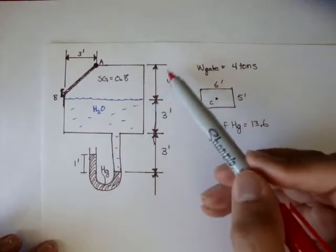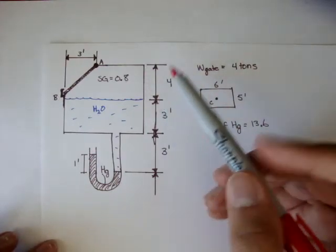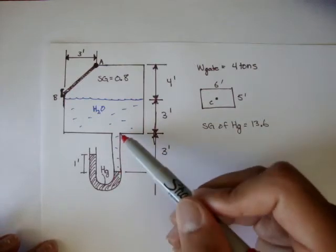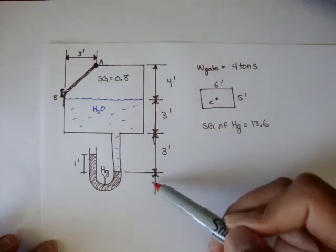The unknown liquid is 4 feet, and the water is 3 feet, and the water inside the manometer is 3 feet.